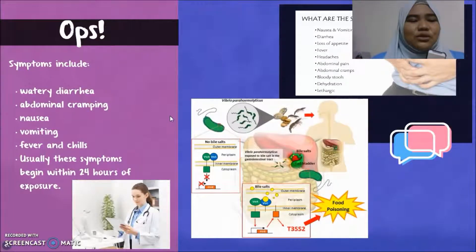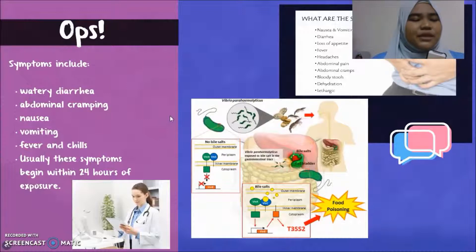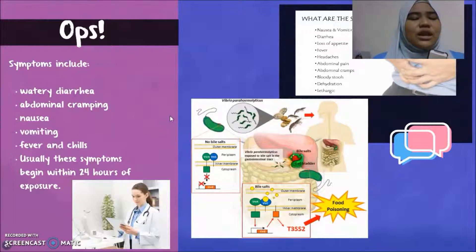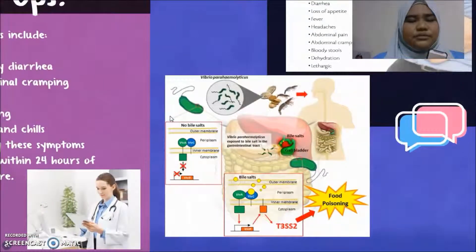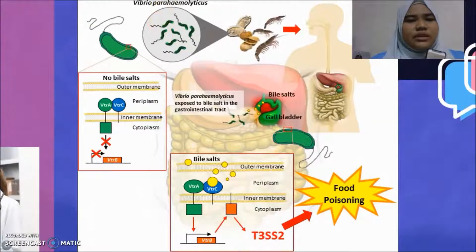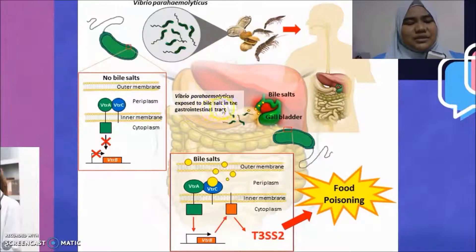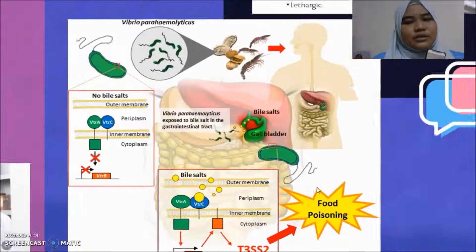The symptoms include watery diarrhea, abdominal cramping, nausea, vomiting, fever, and chills. Usually these symptoms begin within 24 hours of exposure. Vibrio parahaemolyticus attacks our gastrointestinal tract and causes food poisoning.